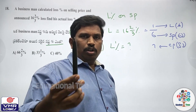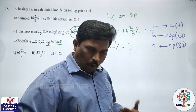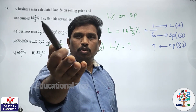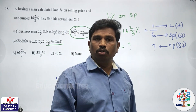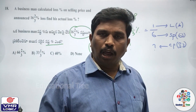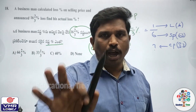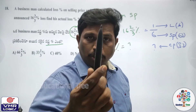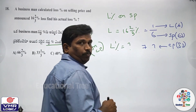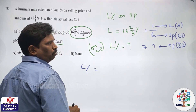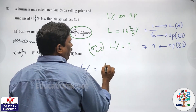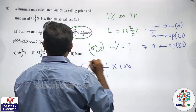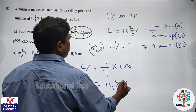Let's start. The actual formula is loss by CP into 100. Loss is 1, SP is 6, and CP is SP plus loss = 6 plus 1 = 7. So 1 by 7 into 100 = 14 and 2 by 7 percent loss. That's the answer.